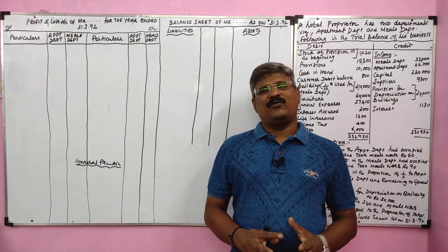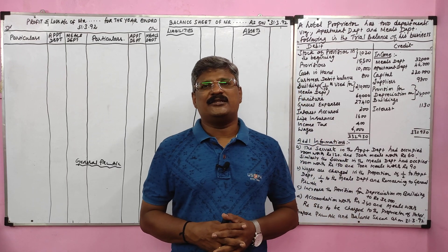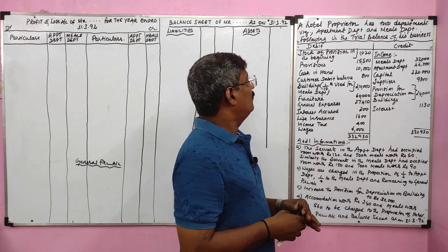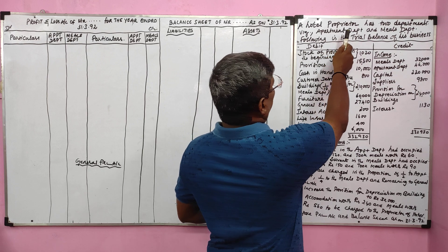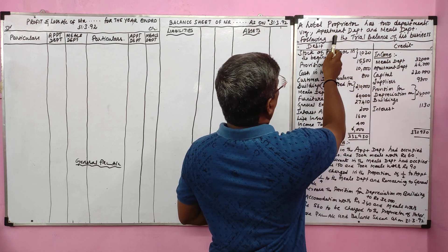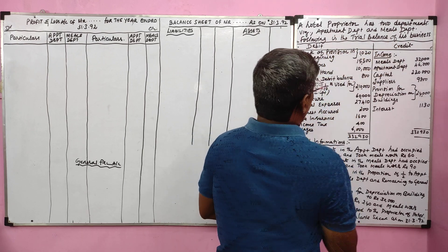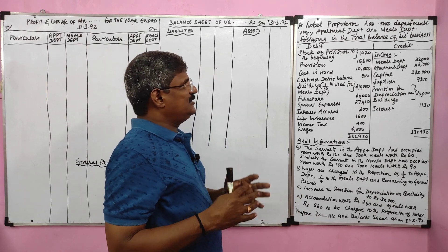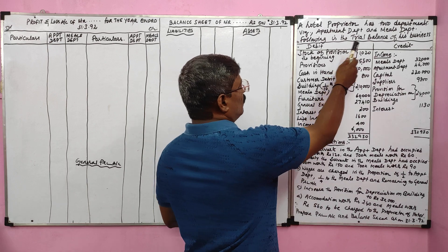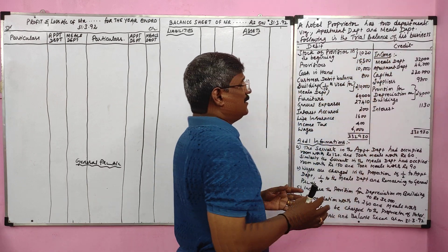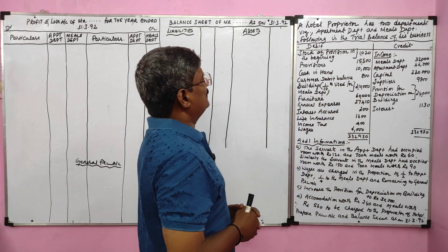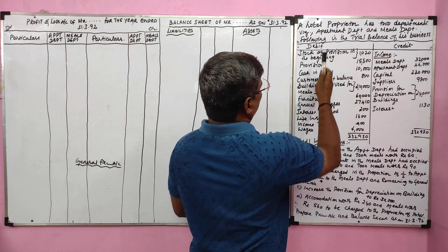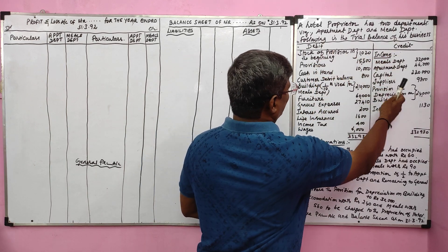Students, in this video we are going to solve one very important problem in relation to departmental accounting. A hotel proprietor has two departments, namely the apartment department and the meals department. Following is the trial balance of his business. Debit balances are given and credit balances are also given.